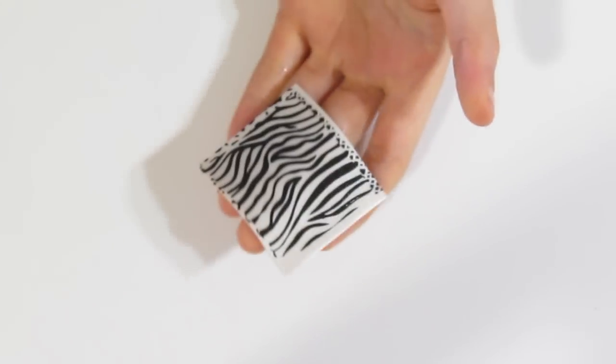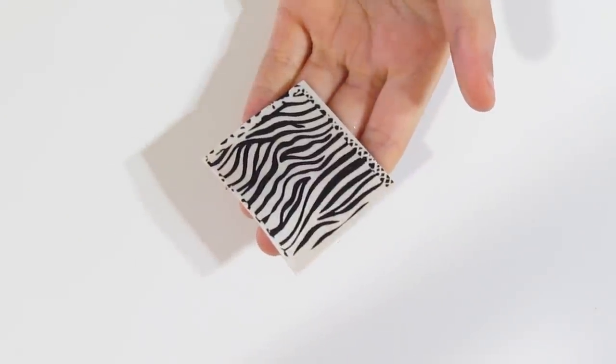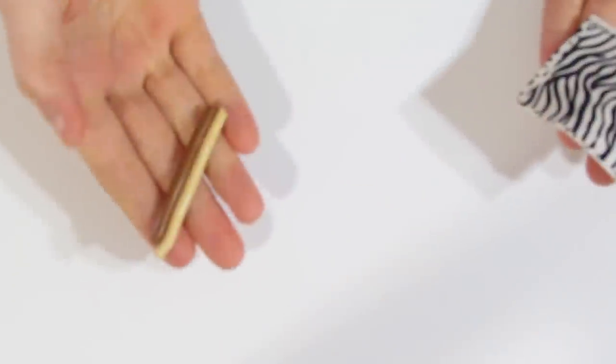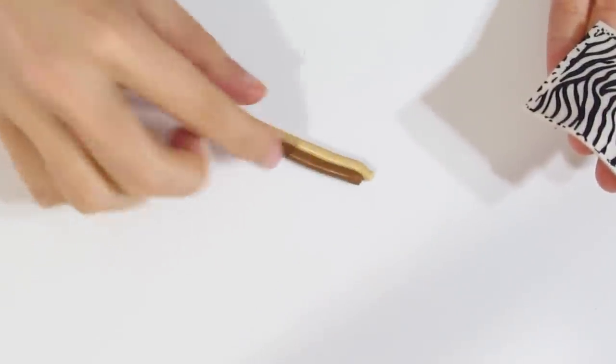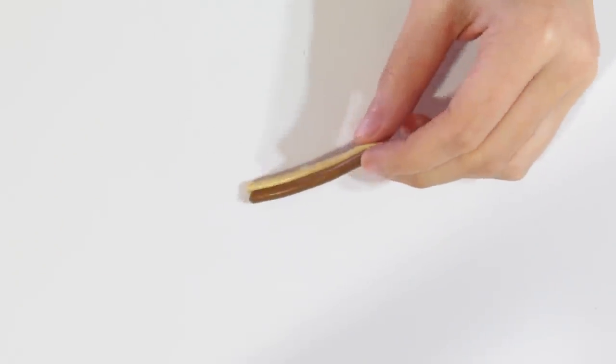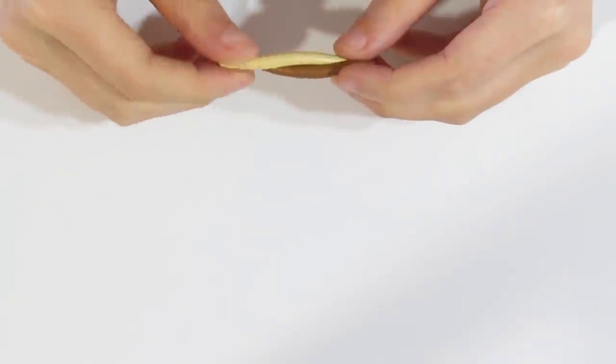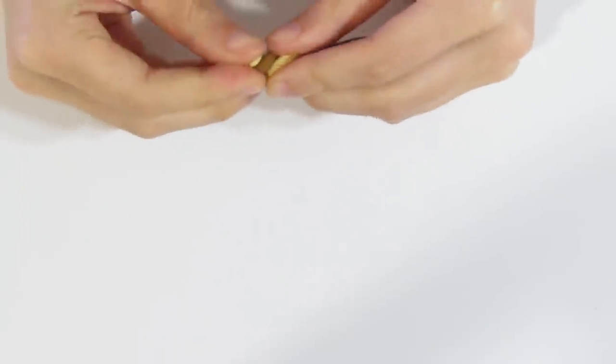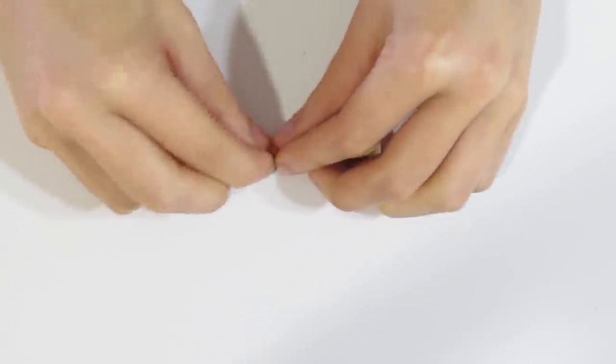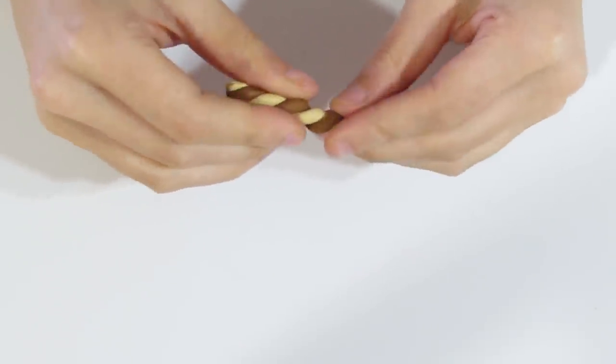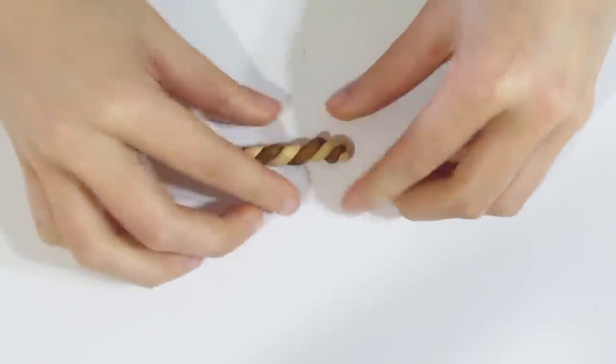And this is why I'd recommend doing the zebra first because all you need to do is roll out a piece of pearl or white clay. However for the leopard one we need to do a marble. So by the time we're finished with the marble our silkscreen will have dried. Whereas if you did the leopard print first, the silkscreen wouldn't be ready to use again. So do the leopard print last.